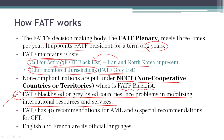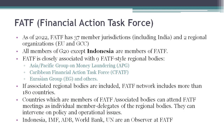FATF has 40 recommendations for anti-money laundering and 9 special recommendations for countering of financing of terrorism. FATF has two official languages: English and French. As of 2022, FATF has 37 member jurisdictions, including India. FATF also has two regional organizations: the European Union and the Gulf Cooperation Council.